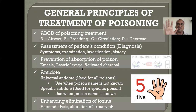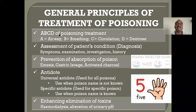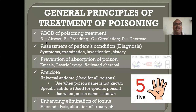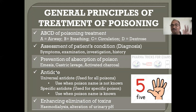There are five principles — all five principles are very important. I have made it very easy for you. First one is ABCD poisoning treatment. What is ABCD? A means airway, B means breathing, C means circulation, D means dextrose. I will explain each one. Here I have given a summary of all five principle headings — very, very important.